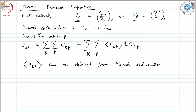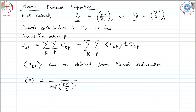What is the Planck distribution? In the Planck distribution, the average number of bosons is given as 1 over (exponential of h-bar omega over tau, minus 1), where tau equals the Boltzmann constant times temperature.